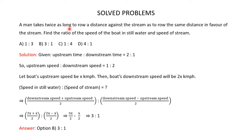Problem 1: A man takes twice as long to row a distance against the stream as to row the same distance in favor of the stream. Find the ratio of the speed of the boat in still water to the speed of the stream. Against the stream means upstream; in favor of the stream means downstream. So the man takes twice as long to row upstream as downstream for the same distance, meaning upstream time to downstream time equals 2 to 1.